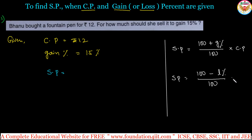Depending on the cost price, the selling price will increase or decrease. If it is profit, the value should be increased, that's why we use 100 plus. If it is loss, the selling price must be reduced, so we use 100 minus. These two formulas apply when cost price and gain or loss percentage are given.